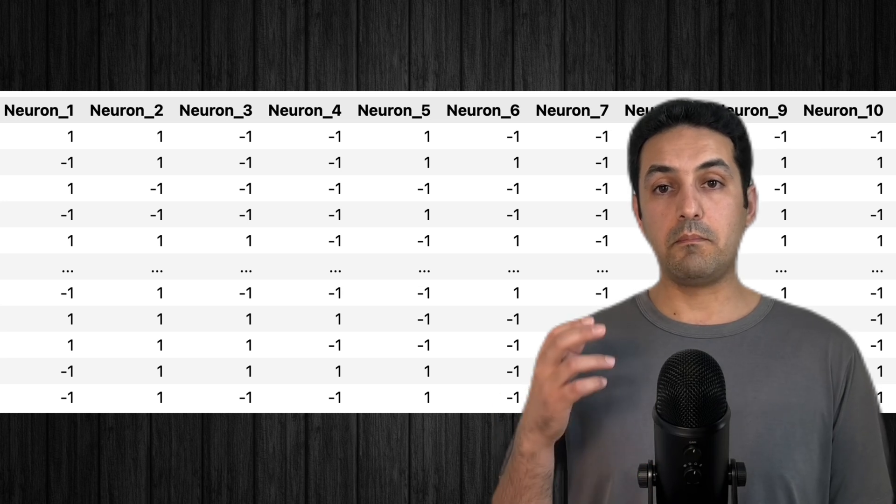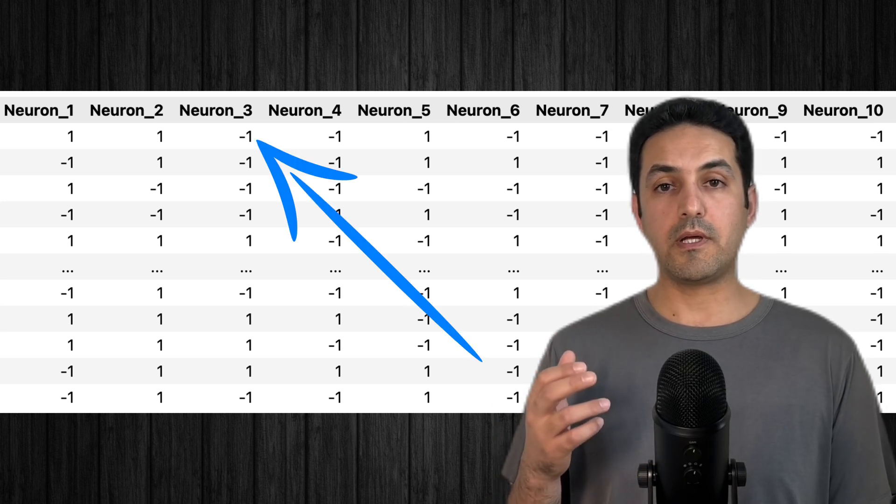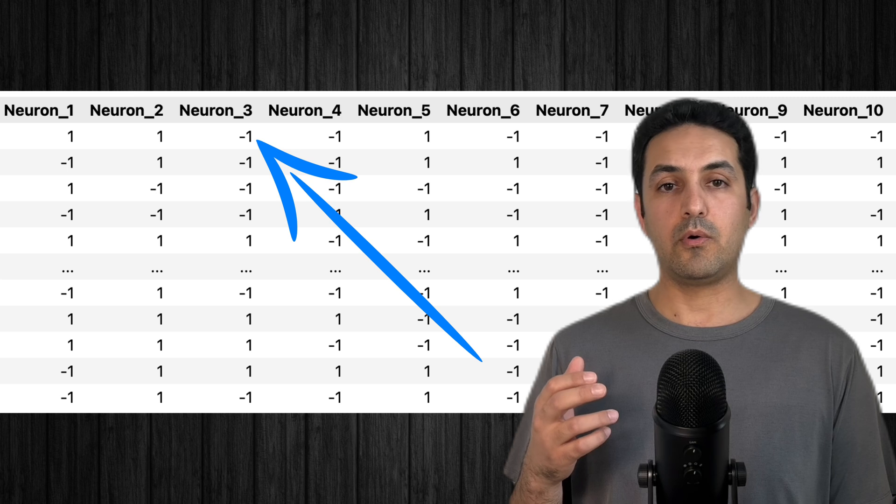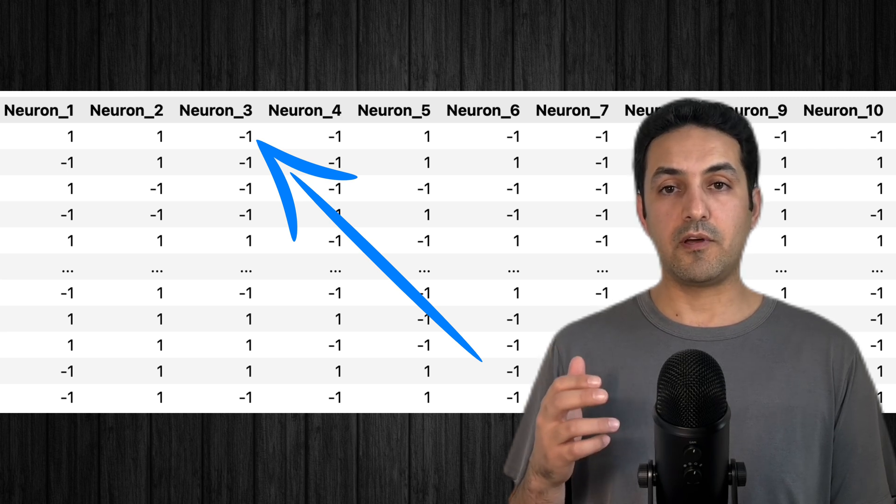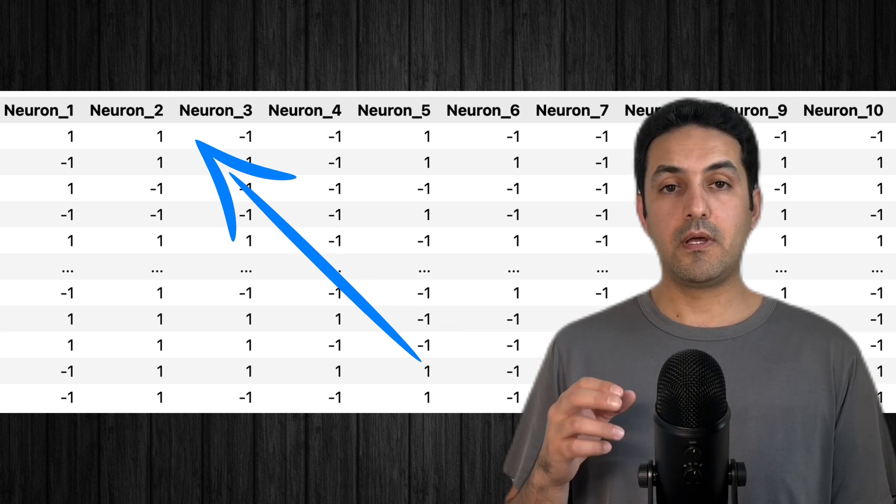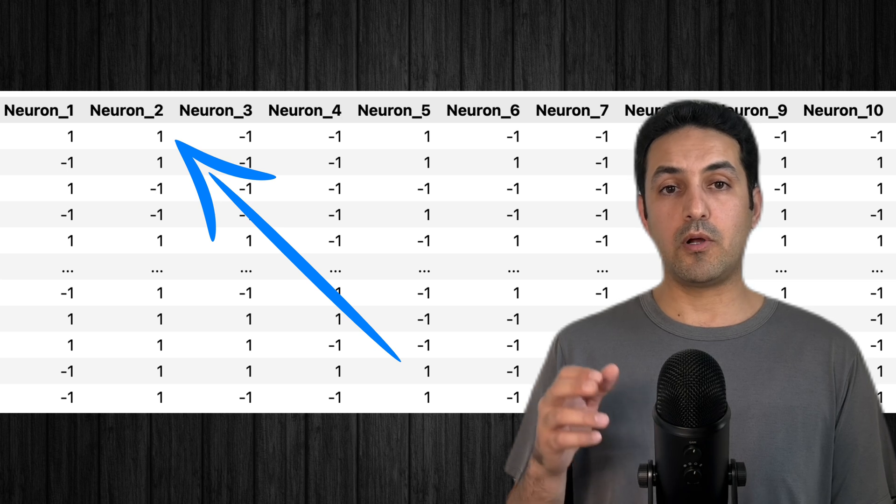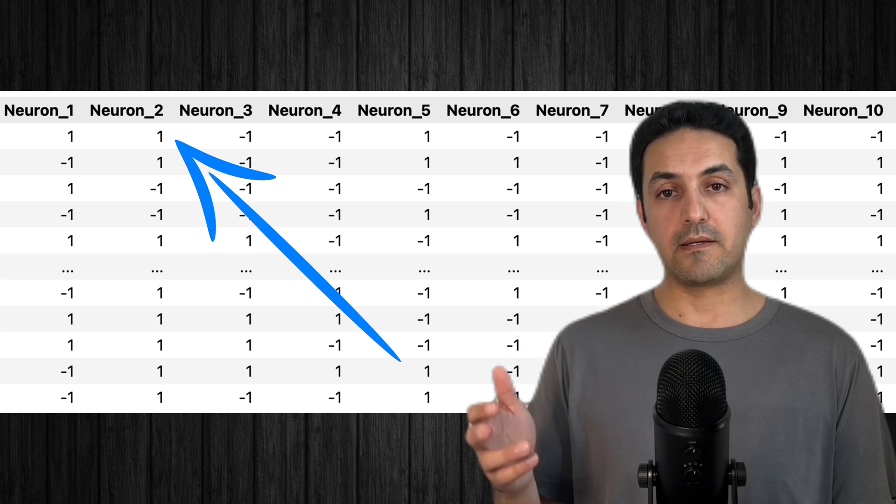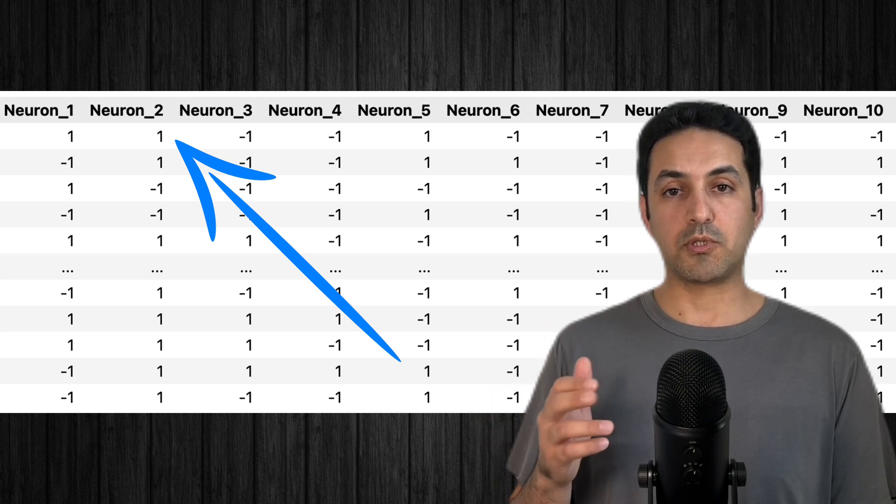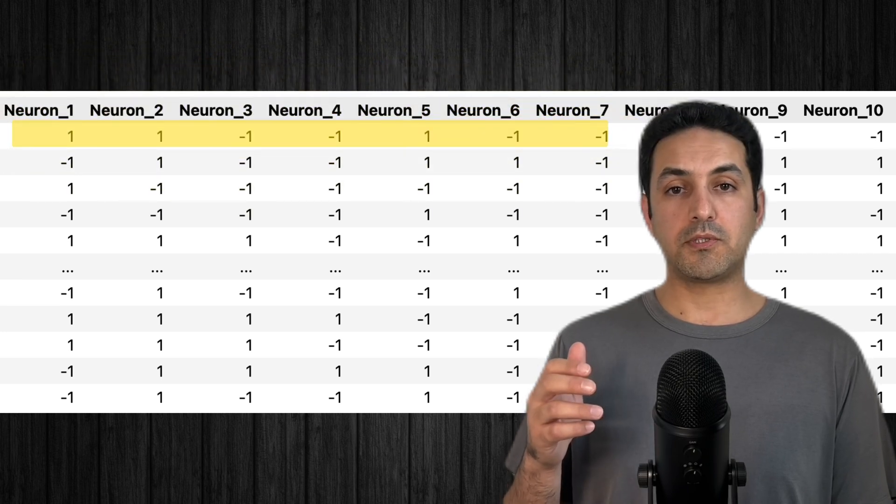In our spreadsheet, a minus one represents a neuron that was not spiking or was inactive at the time the snapshot was taken. A one represents an active neuron.